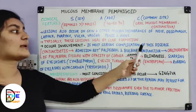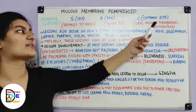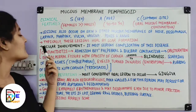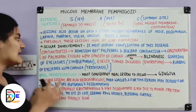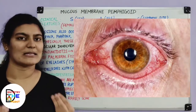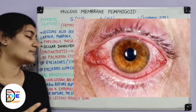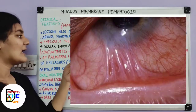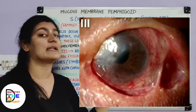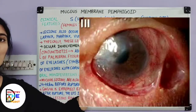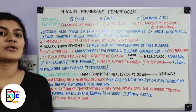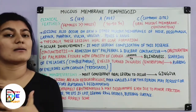Ocular involvement is the most serious complication of this disease. The most common sites are the oral cavity and the conjunctiva. Initially there is conjunctivitis — the common term we all know — which is followed by adhesion between the palpebral and bulbar conjunctiva, causing obliteration of the palpebral fissures with opacity of the cornea, leading to blindness.